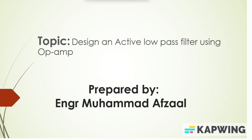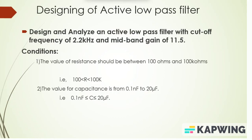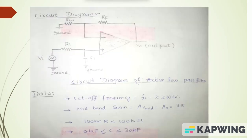In this video we will learn how to design an active low-pass filter using an operational amplifier. The problem statement: design and analyze an active low-pass filter with a cutoff frequency of 2.2 kilohertz and a mid-band gain of 11.5. The given conditions state that resistance values should be between 100 ohms and 100 kilohms, and capacitance values from 0.1 nanofarad to 20 microfarad.